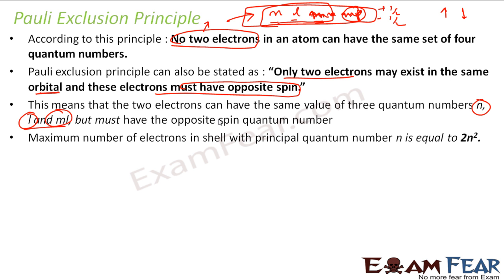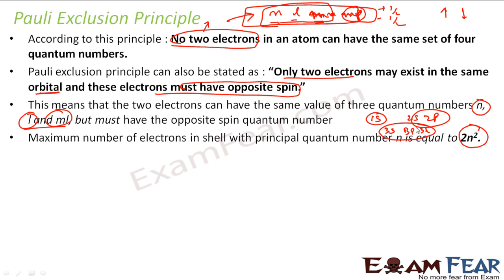The maximum number of electrons in a shell is 2n². For n equals 1, the maximum is 2. For n equals 2 (covering 2s and 2p), it is 2 × 2² = 8. For n equals 3 (covering 3s, 3p, and 3d), the maximum is 2 × 3² = 18 electrons.